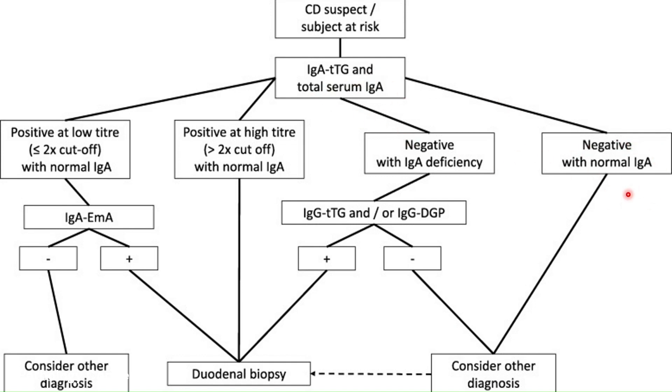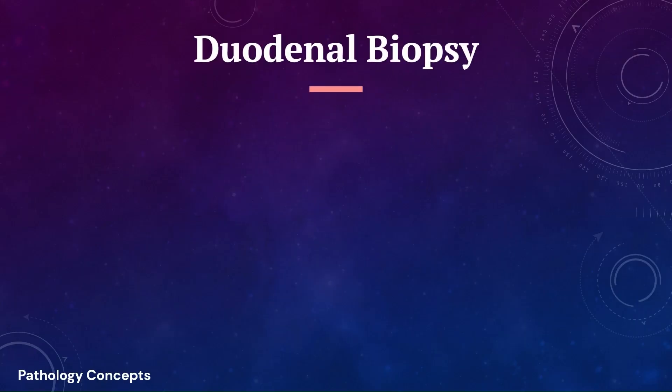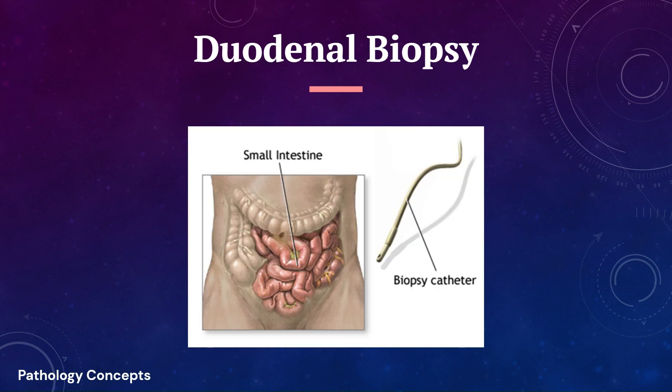In the final scenario, if IgA TTG is negative and total IgA is also normal, then consider diagnoses other than celiac disease.